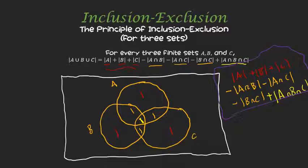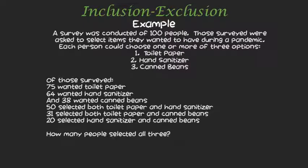You might be wondering: can we do this with more sets? Classic example problems for the principle of inclusion-exclusion involve surveys. Let's say we conduct a survey of 100 people and each person is asked to pick one or more of three options during a pandemic: toilet paper, hand sanitizer, or canned beans. They have to pick at least one. The results: 75 want toilet paper, 64 want hand sanitizer, 38 want canned beans.